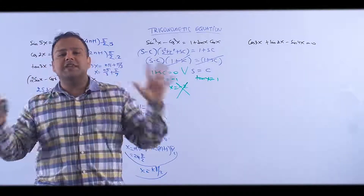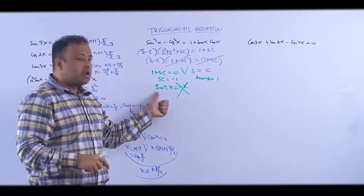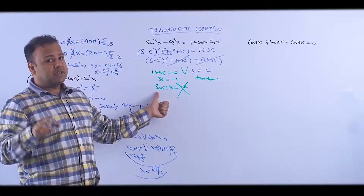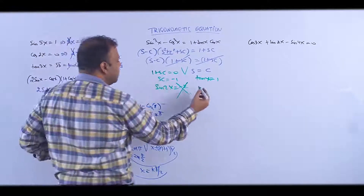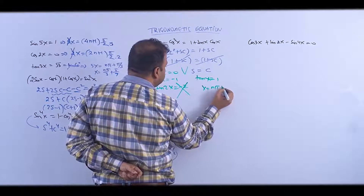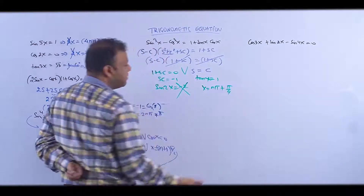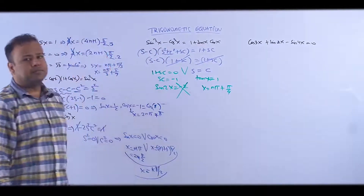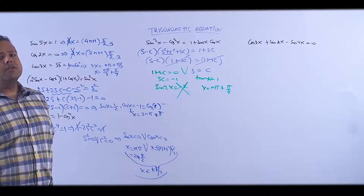Whatever the angle, after applying sine it stays between -1 and 1. So nothing is obtained from that case. From the valid case, x = nπ + π/4. Simple.